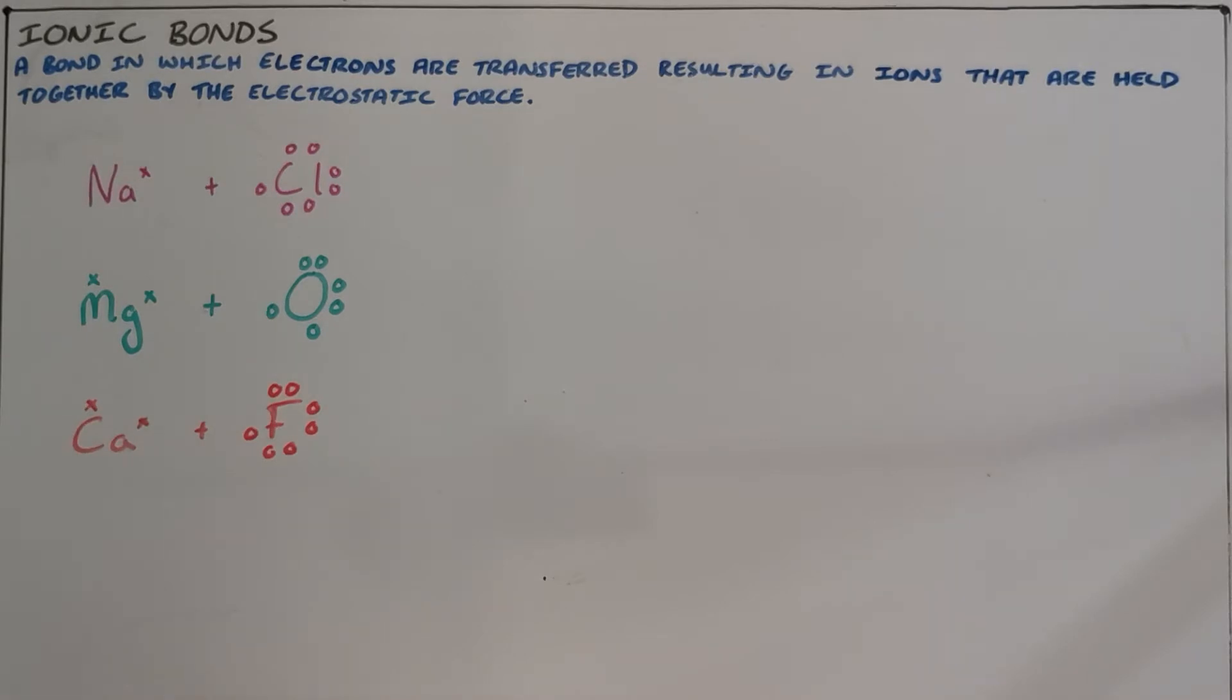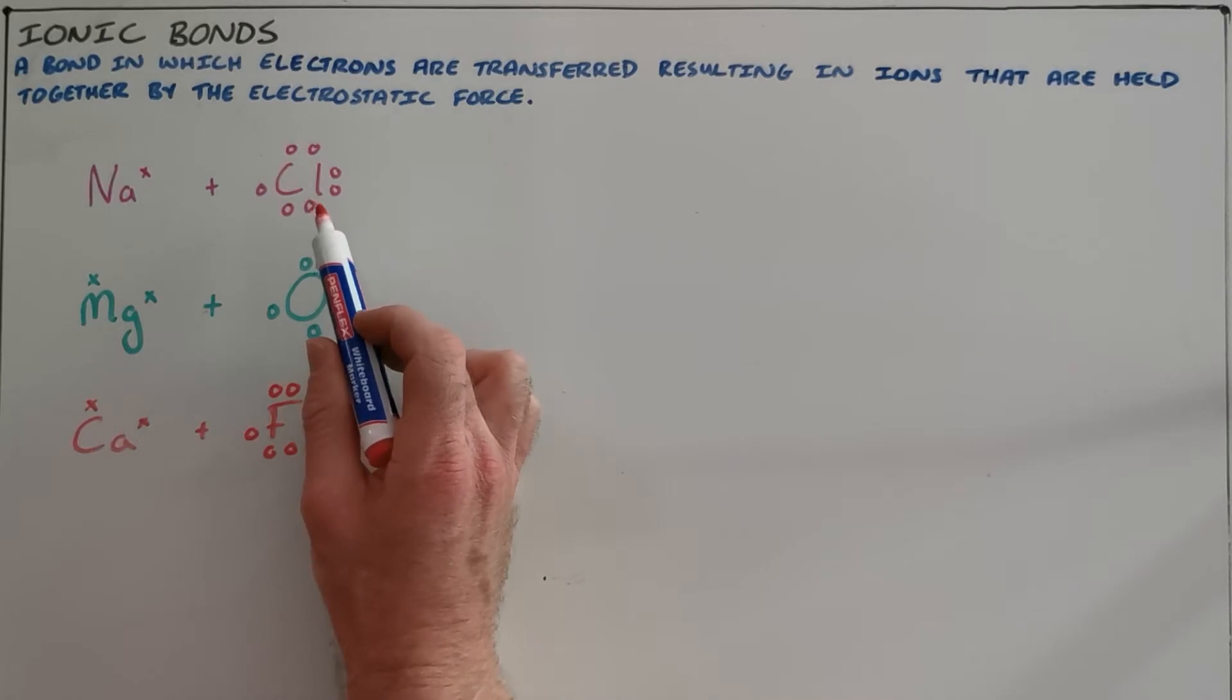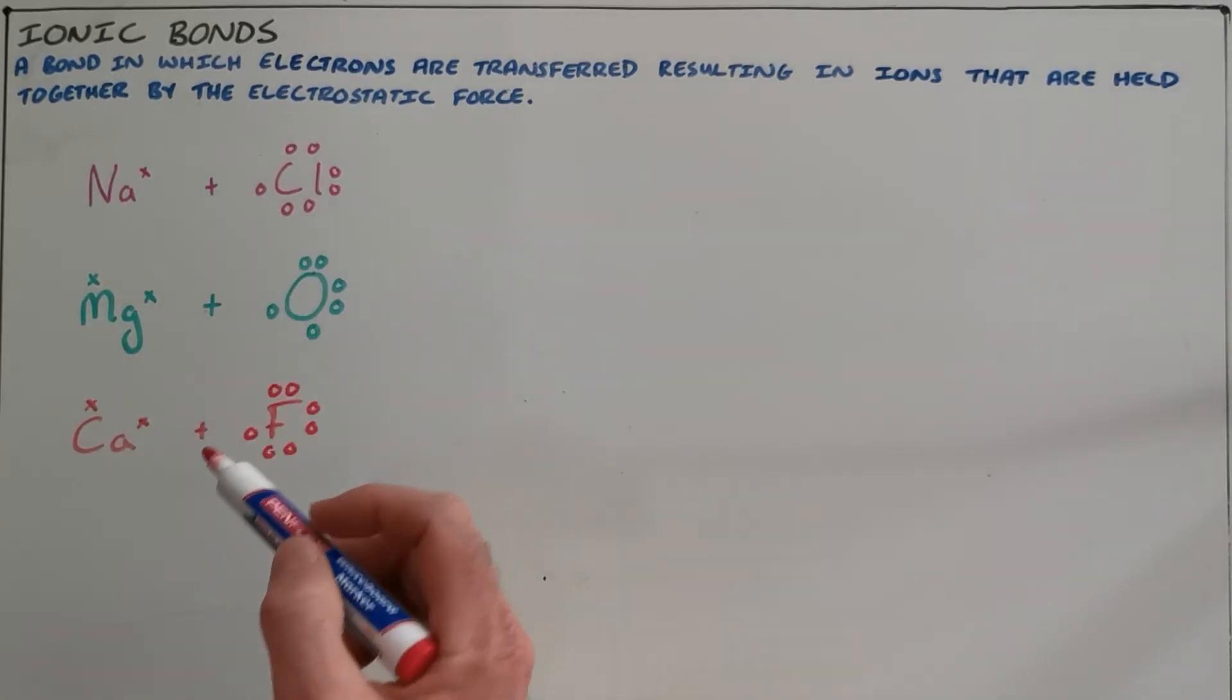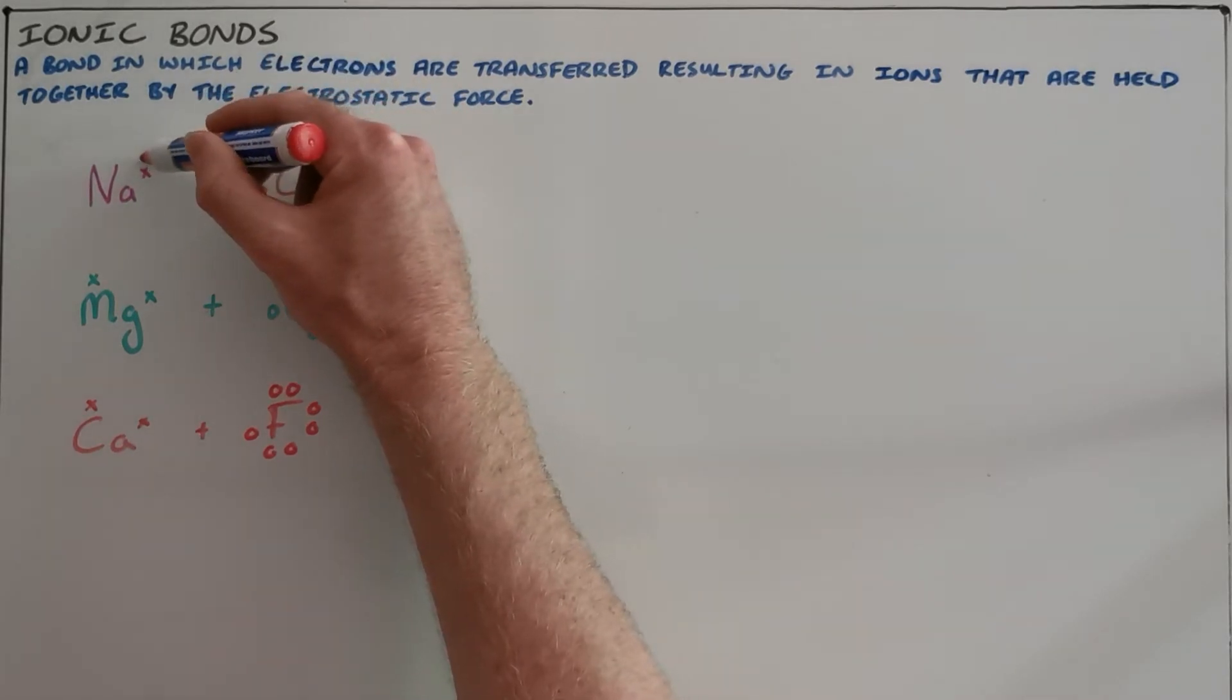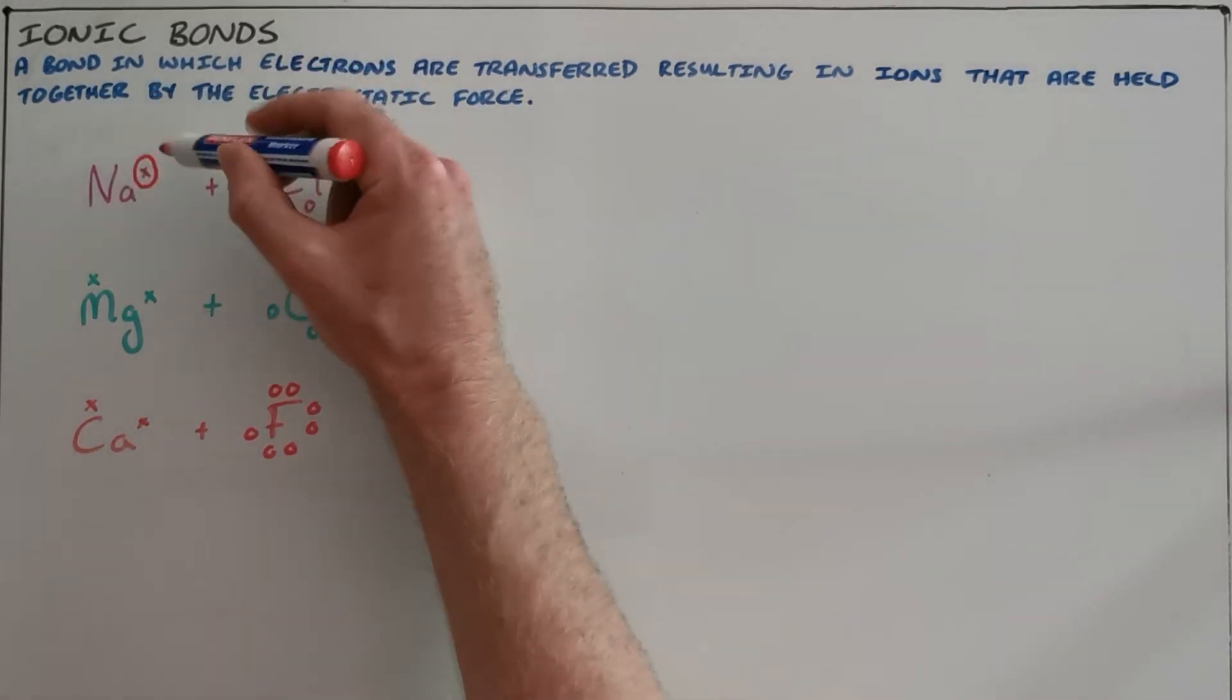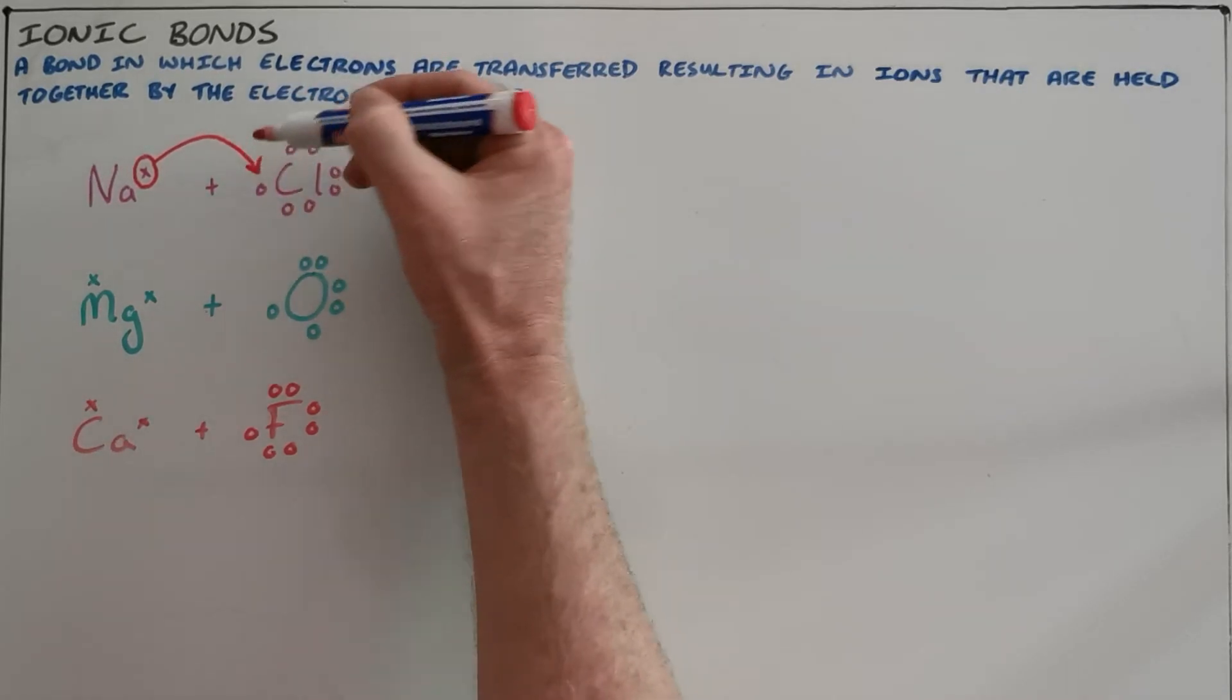As an example, we have here sodium that has one valence electron and chlorine that has seven valence electrons. There is a big difference in their electronegativities, and as a result that single lone valence electron is transferred from sodium to chlorine.